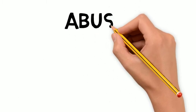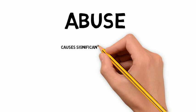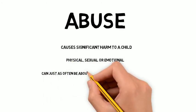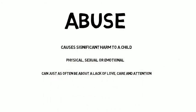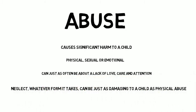As you will be working with children, it is important that you are aware of the various types of abuse that you could possibly be made aware of or that could be disclosed to you. Child abuse is any action by another person, adult or child, that causes significant harm to a child. It can be physical, sexual or emotional, but it can just as often be about a lack of love, care and attention. We know that neglect, whatever form it takes, can just be as damaging to a child as physical abuse.